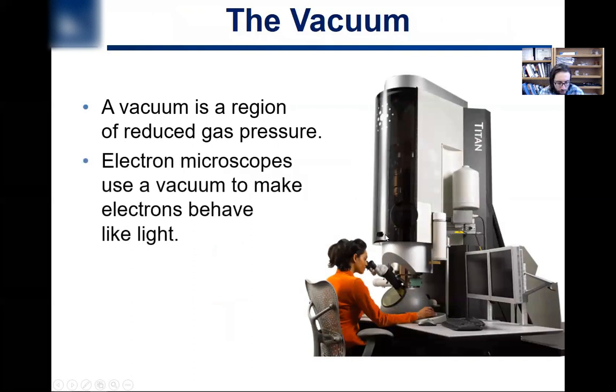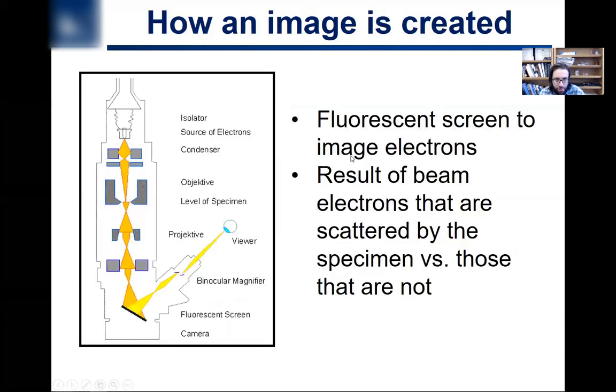And then part of what makes this thing so expensive is that the whole instrument is under high vacuum conditions. And so there's a series of vacuum pumps that bring it down to the correct pressure. And you need this because you don't want your high energy electrons bouncing into air molecules and ionizing air. Then the electrons aren't going to be able to be used in this microscope fashion.